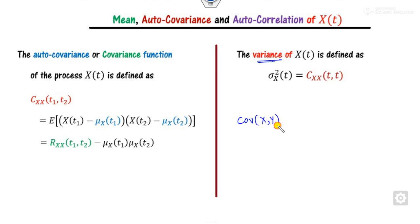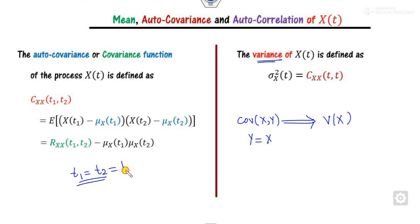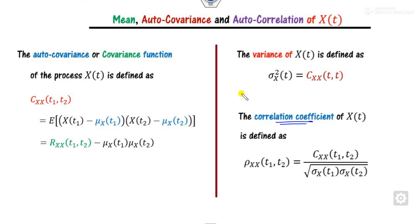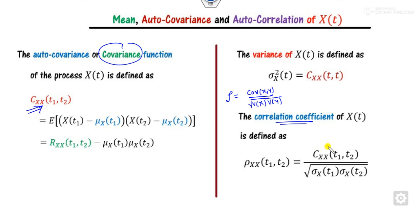The variance is obtained from the covariance by setting t₁ = t₂ = t. Finally, the correlation coefficient is defined as C(t₁, t₂) divided by the square root of Var(X(t₁))·Var(X(t₂)), analogous to the standard definition of the correlation coefficient as covariance of X, Y divided by the square root of the product of their variances.